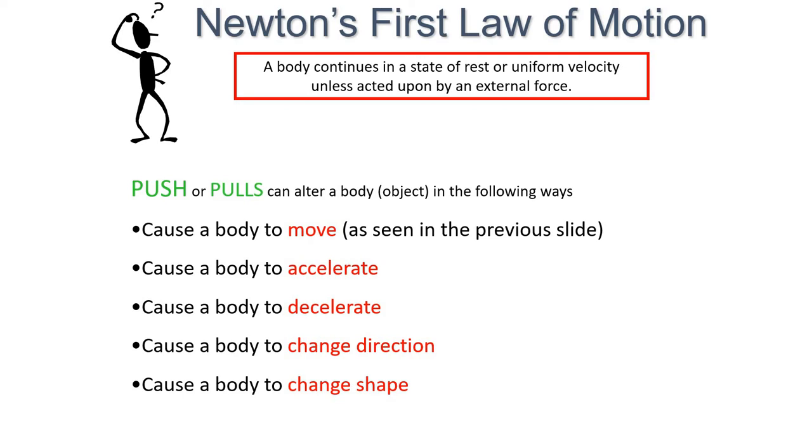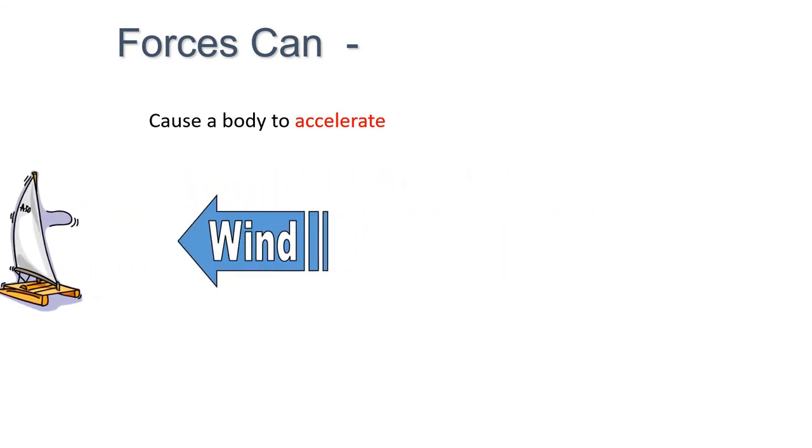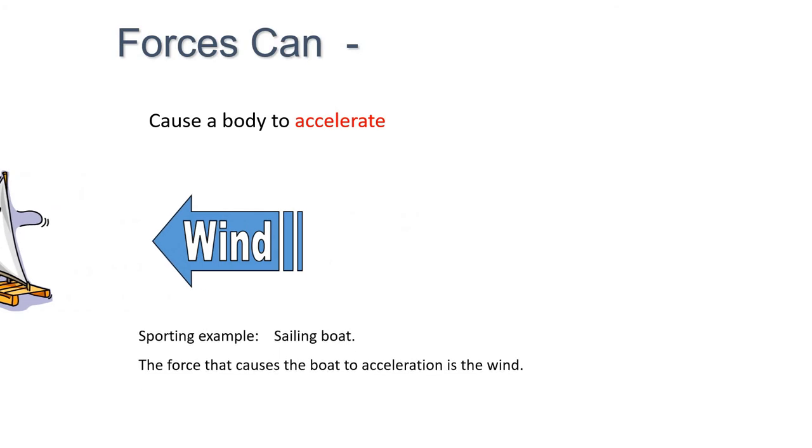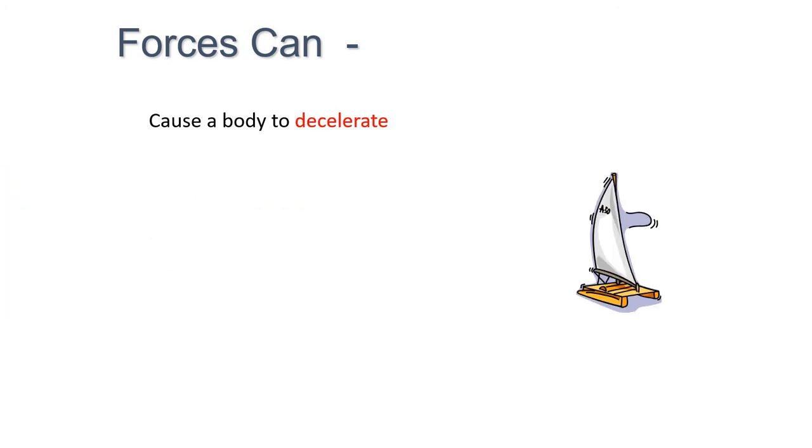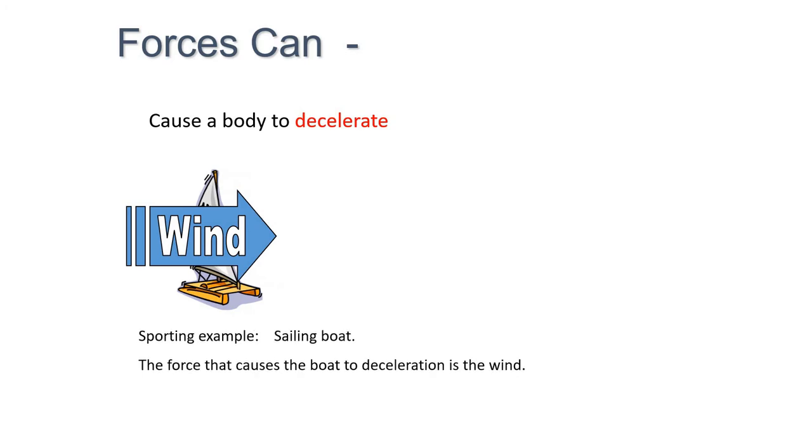It can cause a body to accelerate or speed up. It can cause a body to decelerate or slow down. It can cause something to change direction, or it can cause them to change shape. So you can see here, for an example, a sailboat. Once wind gets behind the sail, then it will cause the sailboat to accelerate. And the same situation applies if the wind comes from a different direction. It will then cause that sailboat to decelerate. The sailboat will remain going at the same speed until that force hits it.